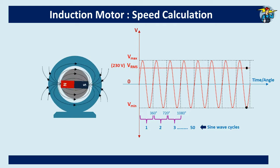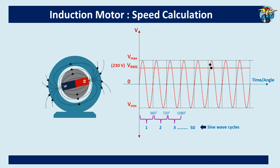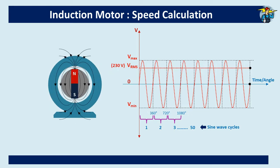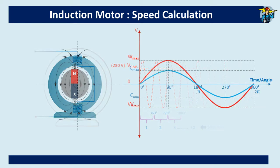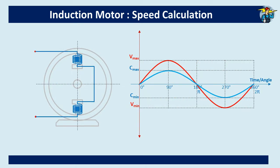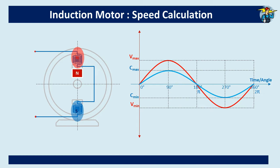In North America, including the USA, the supply RMS voltage is 120 volts and the frequency is 60 Hz, whereas in Europe and most other countries it is 230 volts RMS at 50 Hz. Now let's see how the north and south poles change as the voltage sine wave advances through a cycle. For a motor with one pair of poles, when current flows through the windings, the north pole changes to south and back to north again within one voltage cycle. You can clearly see that the magnetic field rotates one complete circle of 360 degrees within one voltage cycle.